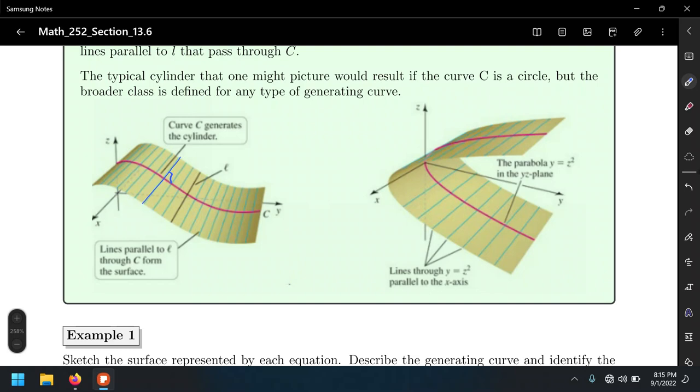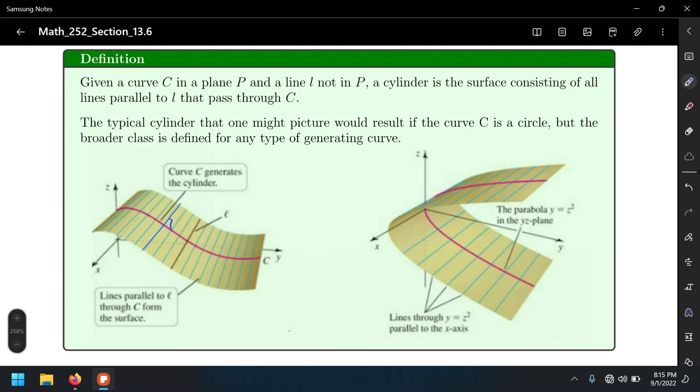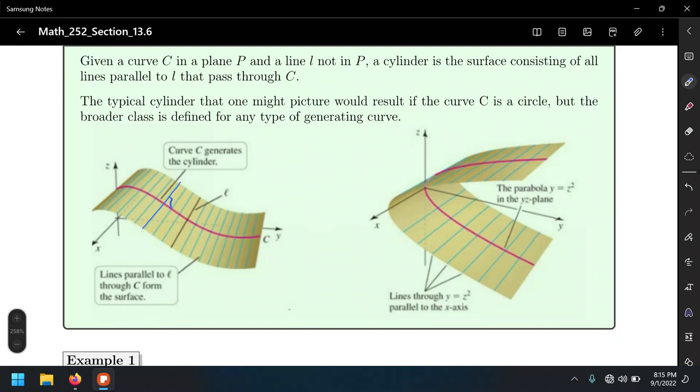So in this case, the official definition is given a curve C and a plane P and a line L not in P. Those are these lines right here. A cylinder is the surface consisting of all lines parallel to L that pass through C, which is that curve. In this case, a cosine or the parabola.